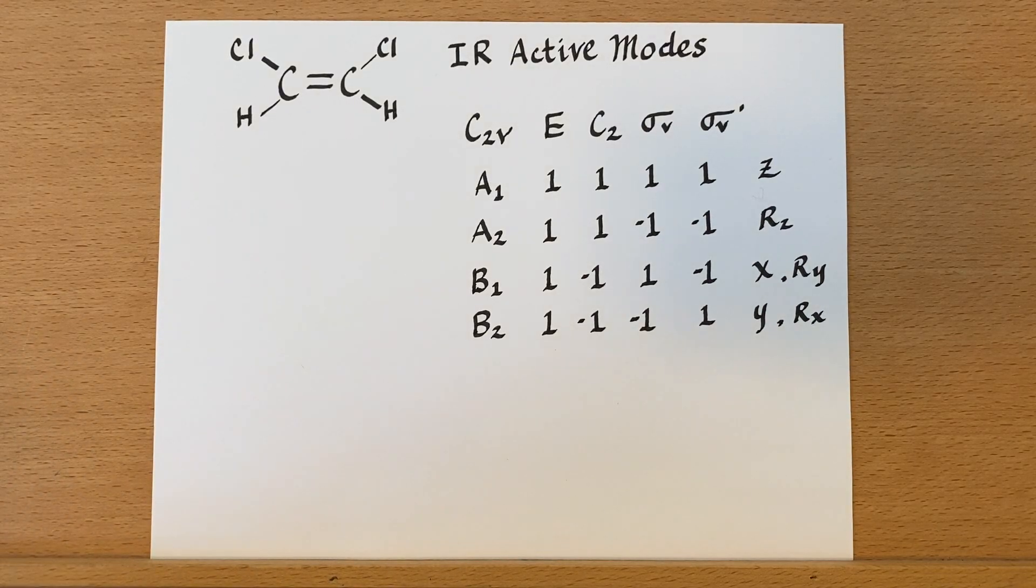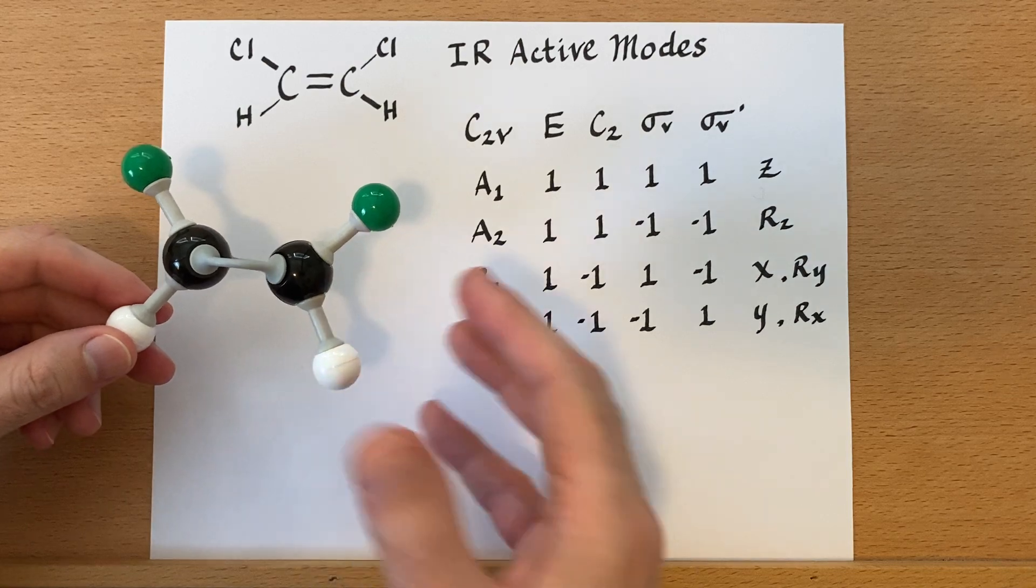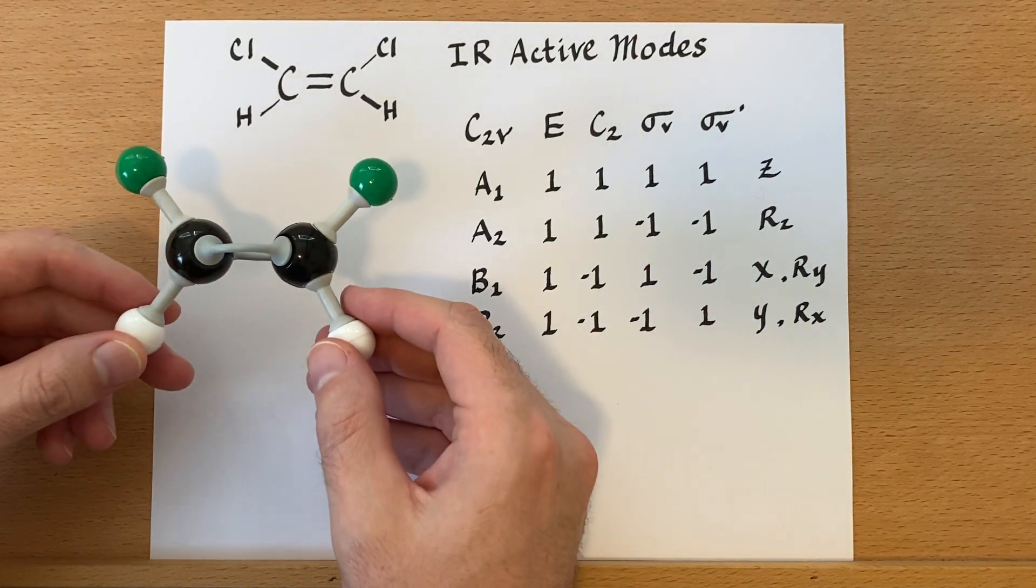I just made a video about the trans-1,2-dichloroethene, so I thought I would make one about the cis version isomer, just as a completion standpoint.